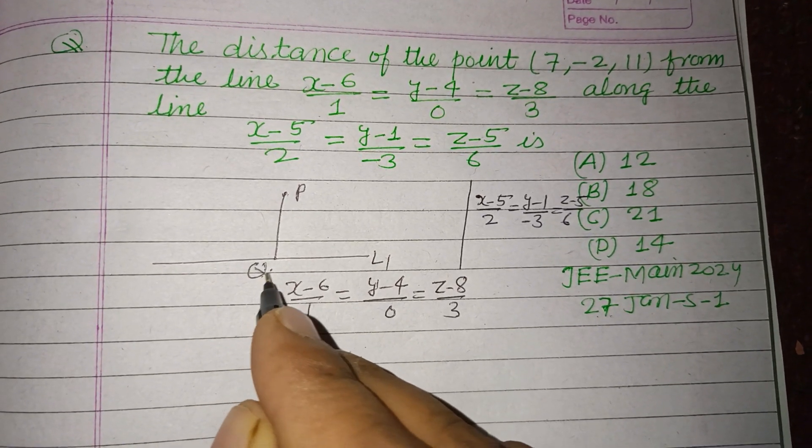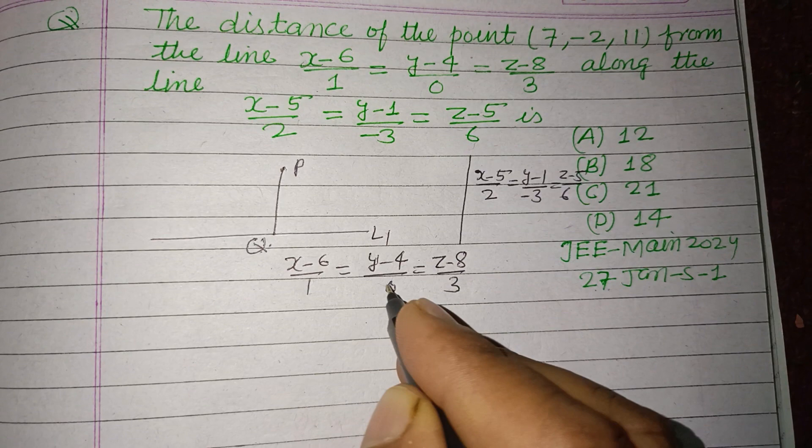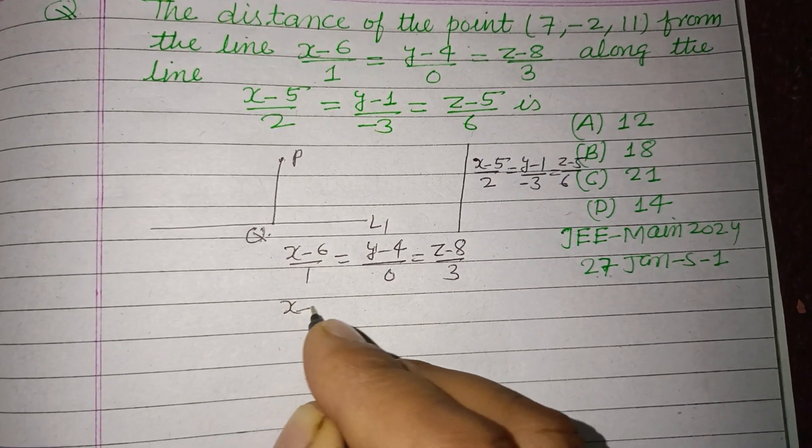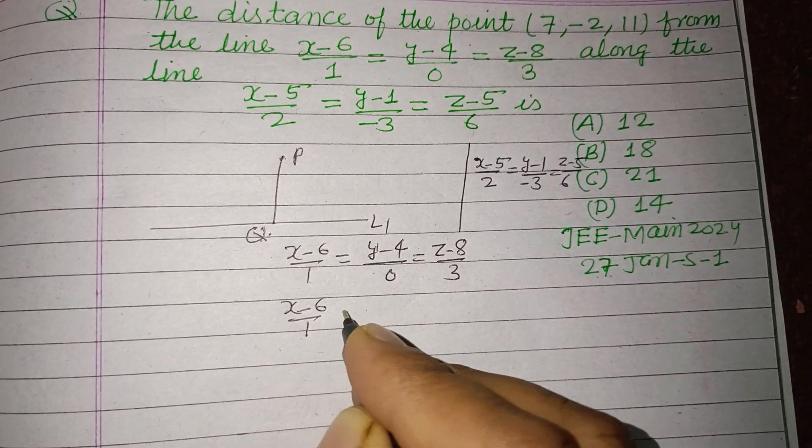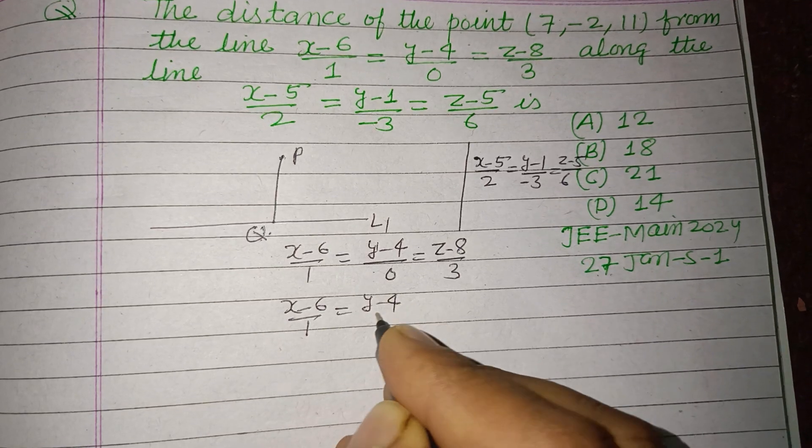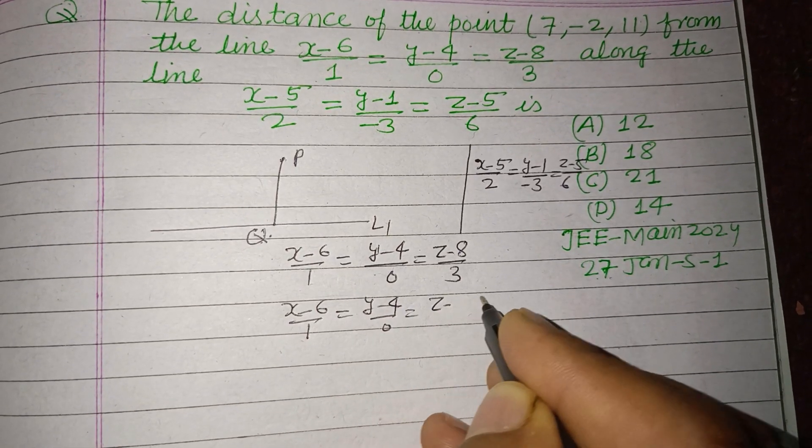first we find this point Q on this line. So we put (x-6)/1 = (y-4)/0 = (z-8)/3 = λ. So from here, x = λ + 6, y =